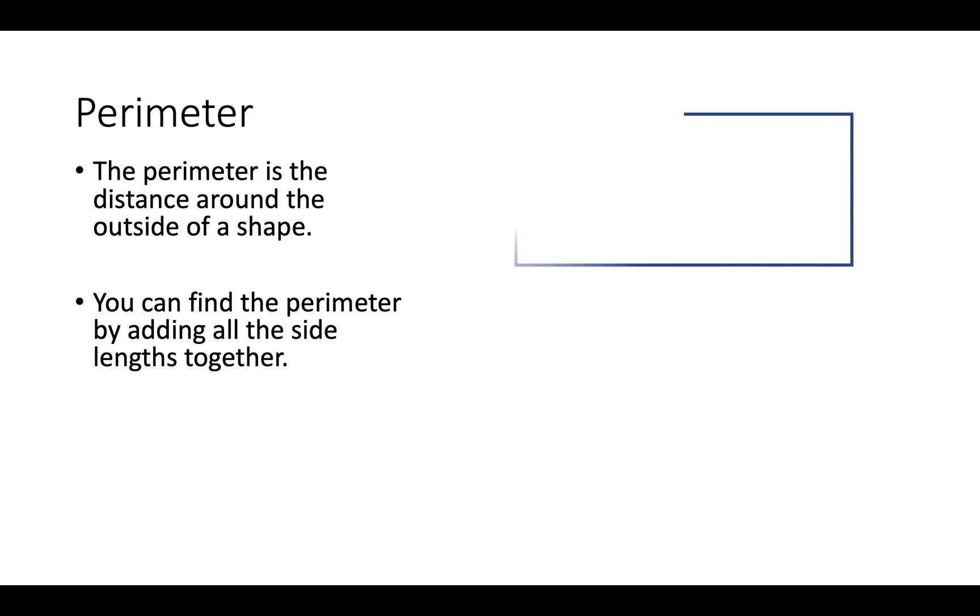Perimeter is the distance around the outside of the shape. You can find the perimeter by adding all of the lengths of the shape together. It looks like this. That's for a rectangle.